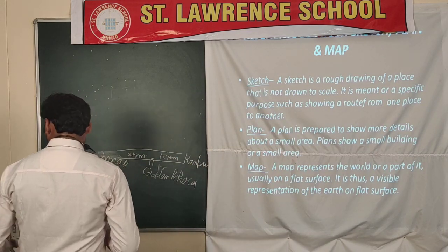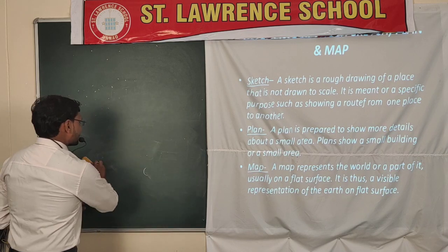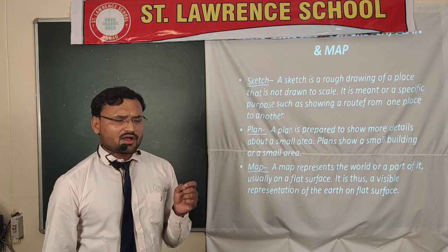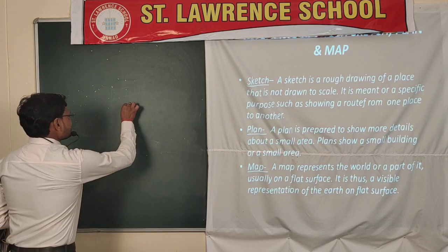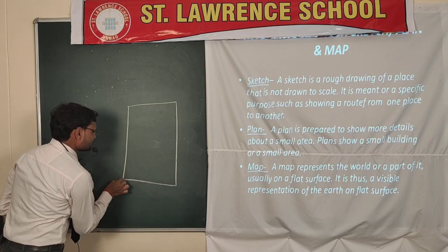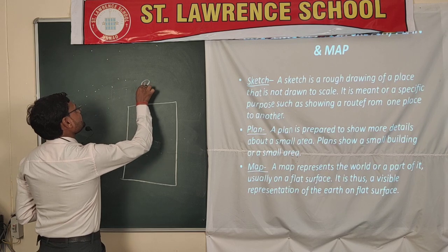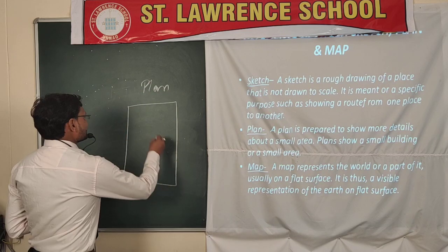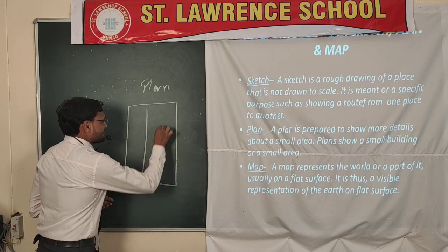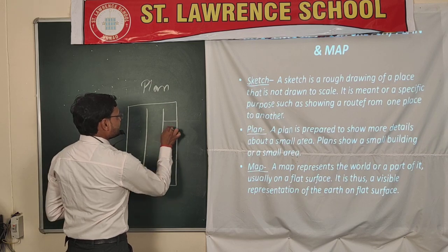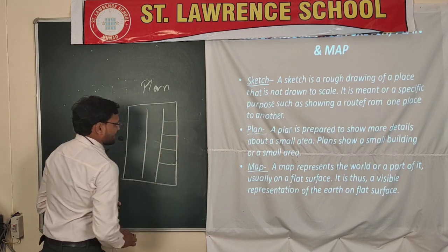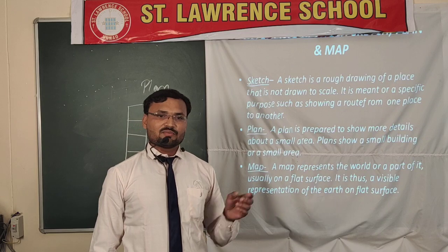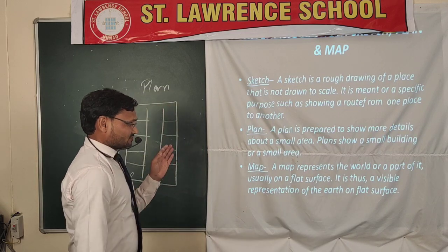The second point is the plan. A plan is more accurate than a sketch. In a sketch, we don't need a scale, and in a plan we also don't need a scale, but it is a very accurate representation of buildings or small areas. For example, in examinations we see that seating plans are made for students — showing the hall with rows and how many students sit in each row. Plans are drawn for buildings and small areas.